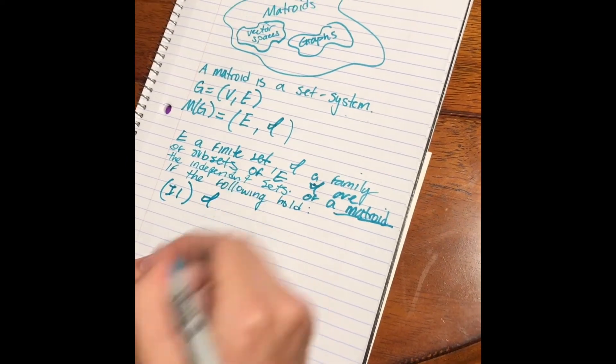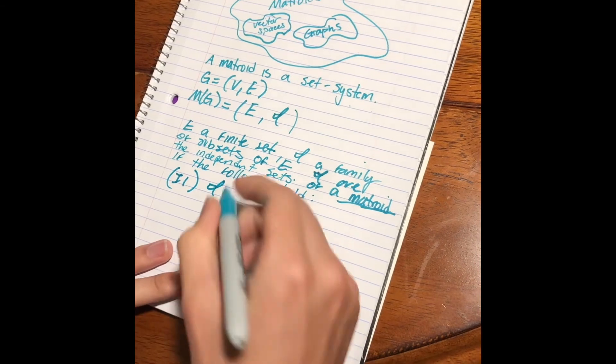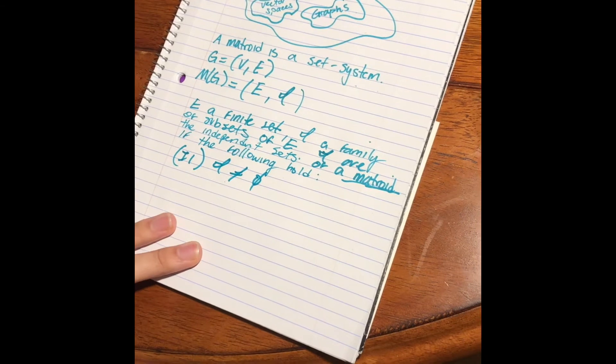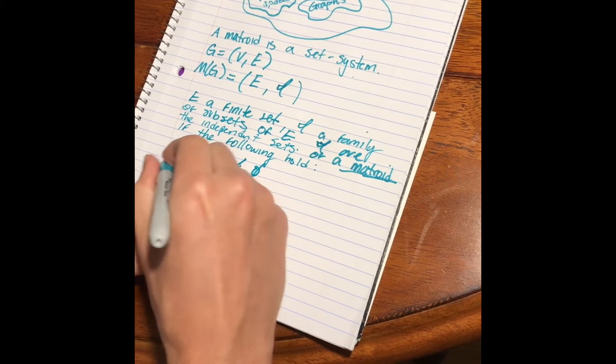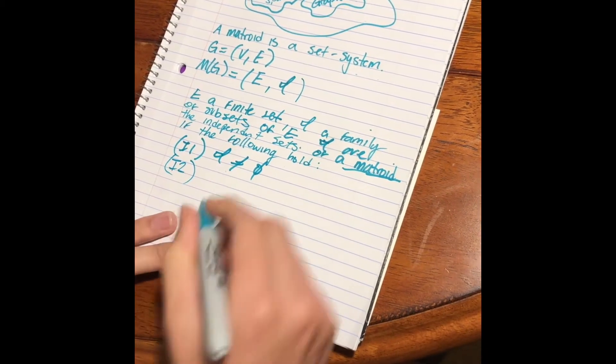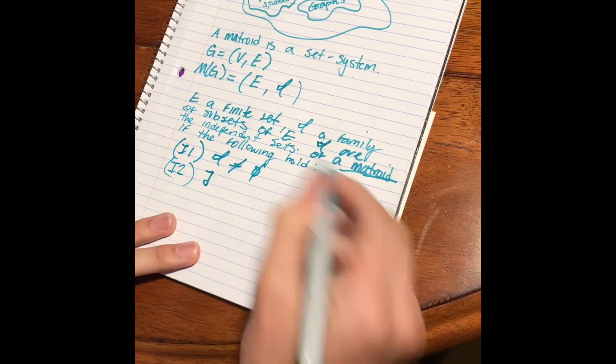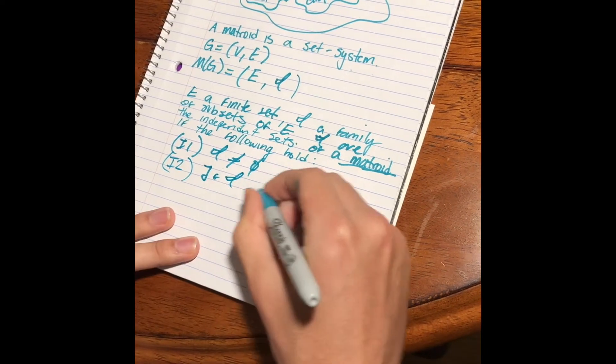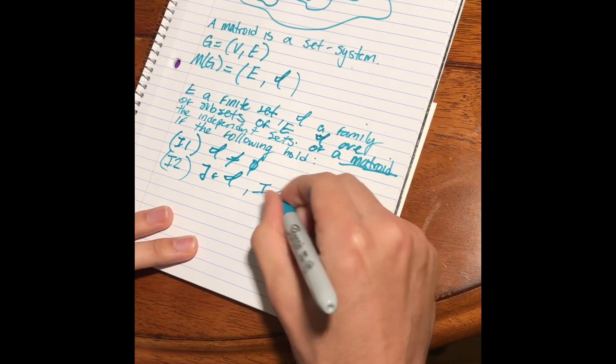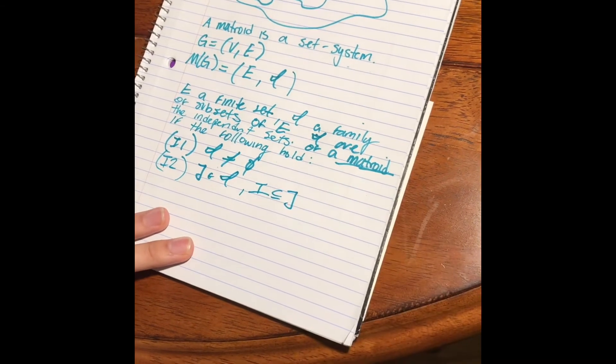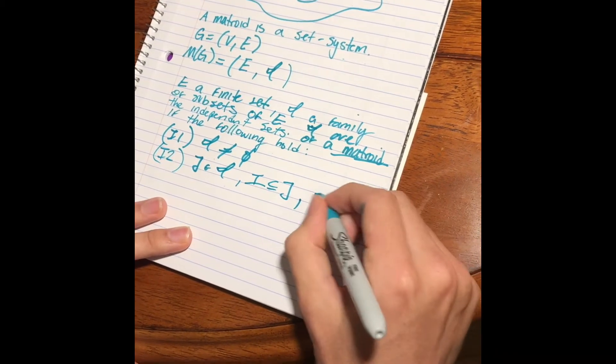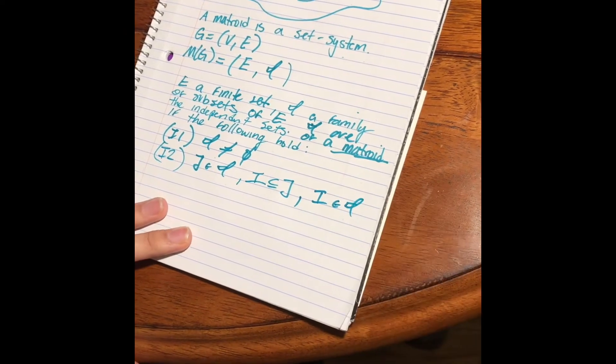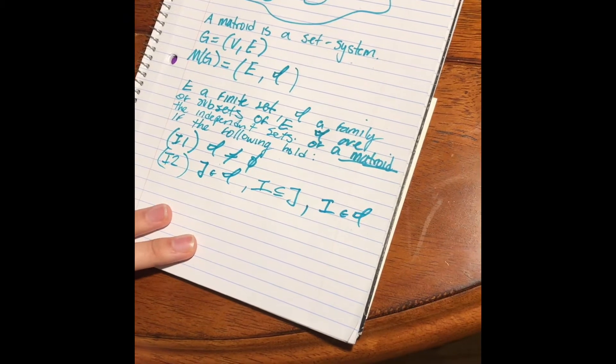The first is that our family of independent sets is not empty. That would be stupid. The second axiom is that if we have an independent set in our family and another set that's a subset of that set, then we know automatically that that subset is also in our family of independent sets. Seems pretty straightforward, right?